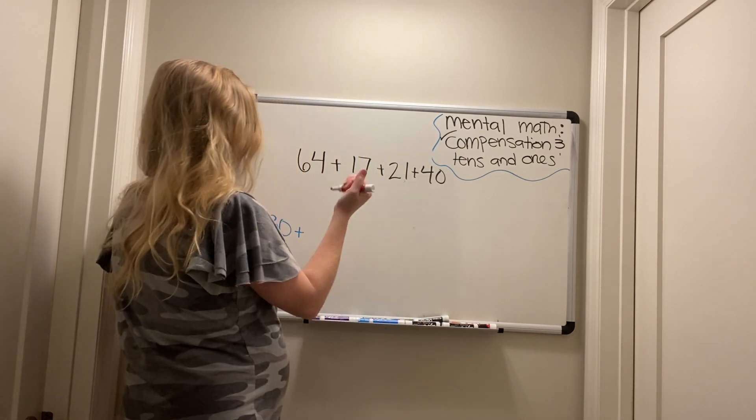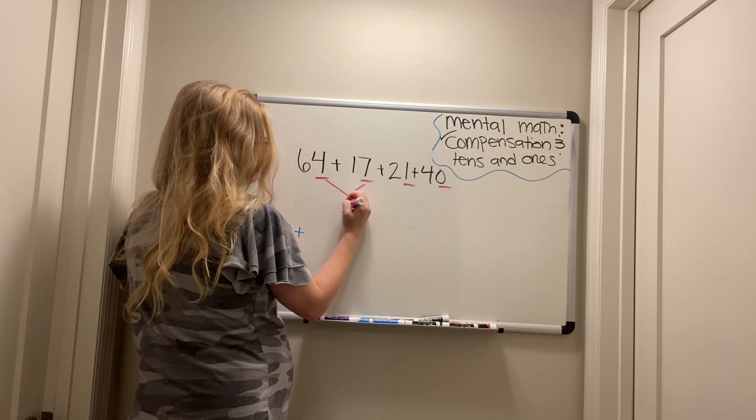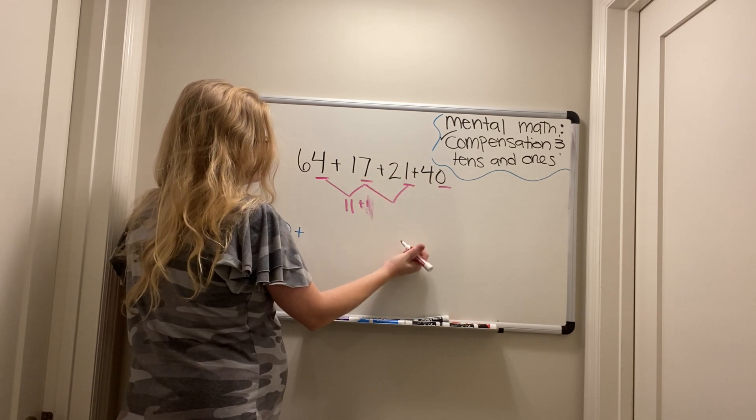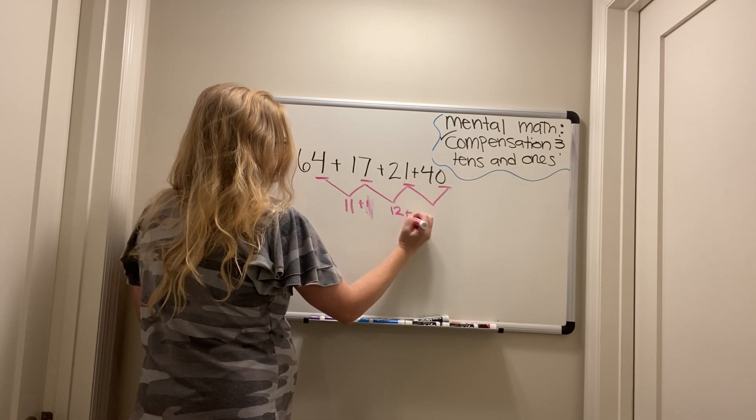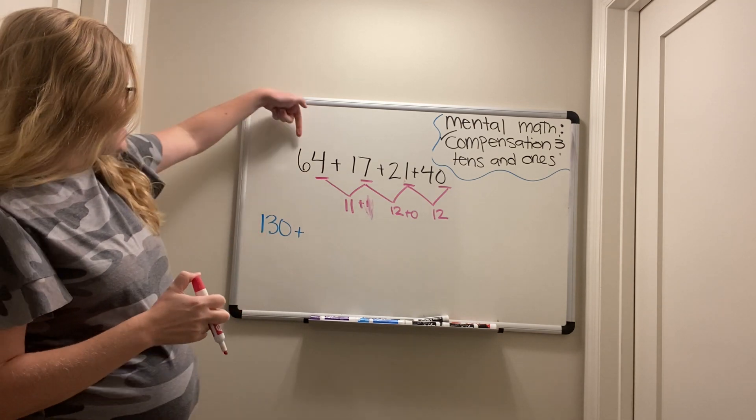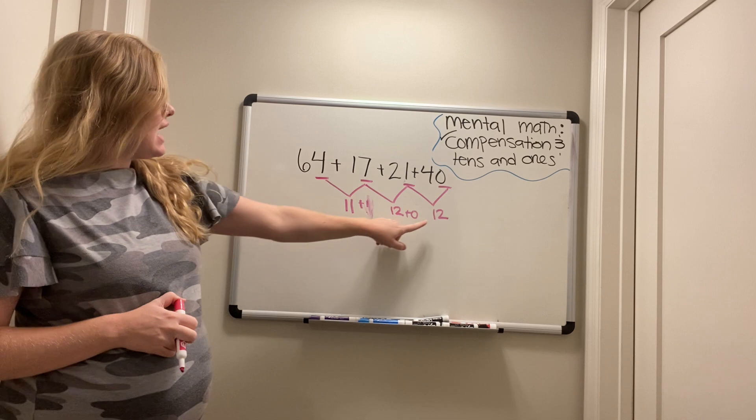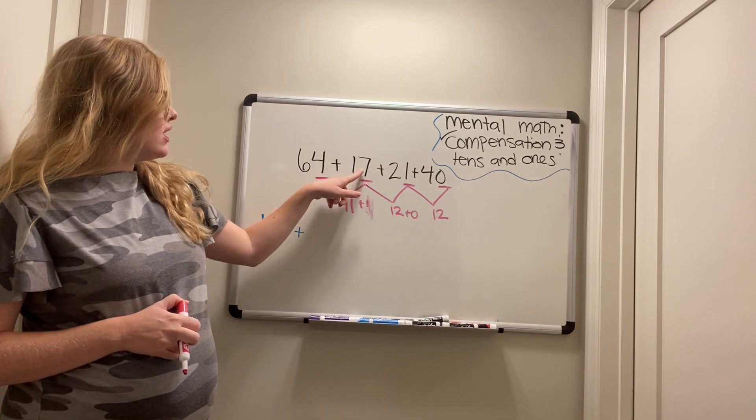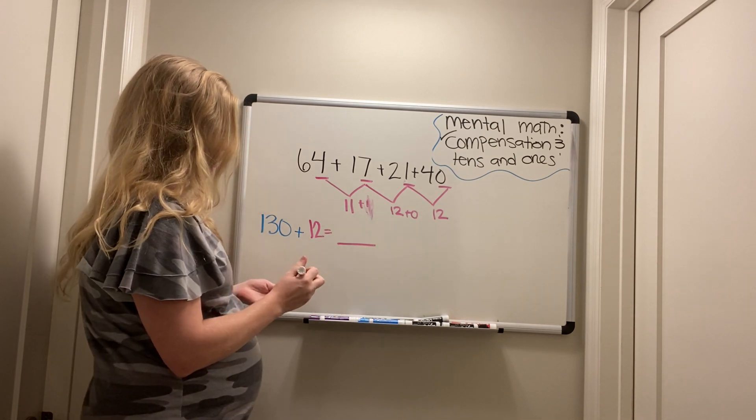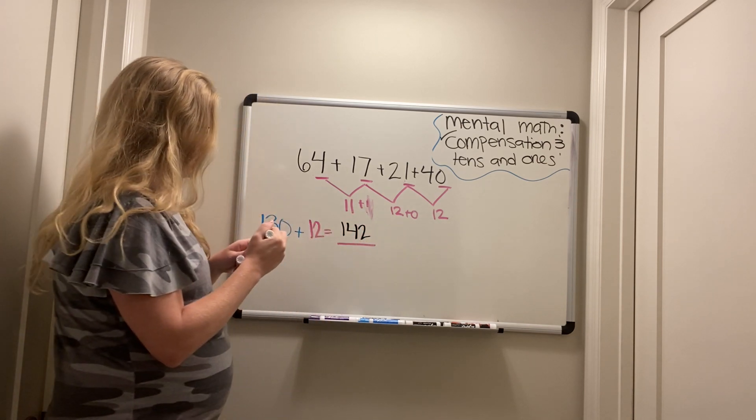Okay. Let's go to our ones here. Here we have a four, seven, one, and a zero. So four plus seven is 11. Good. 11 plus two, or excuse me, 11 plus one is 12. Good. 12 plus zero is still 12. So now we have 130 that we got from having 60, 10, 20, and 40. We got 130. And now we have 12 from four, seven, one, and zero. So 130 plus 12 equals our answer, which is what? Good. 142. Let's do one more like this. Then I'll send you off on your own.